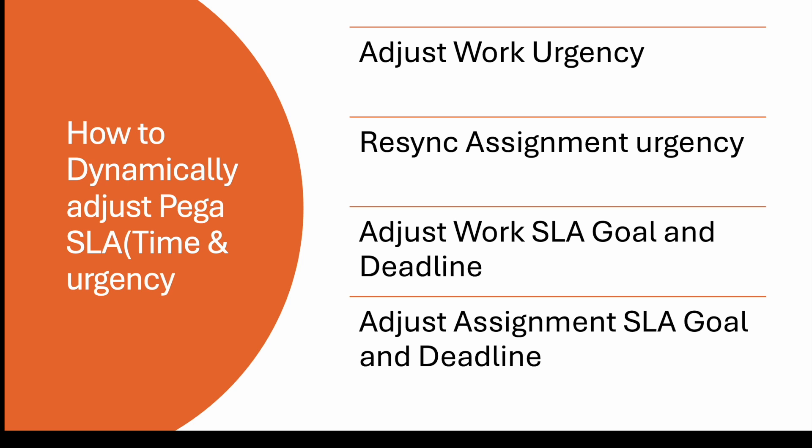We're going to discuss how to adjust case-level urgency, how assignment urgency gets calculated (assignment urgency plus work urgency equals total assignment urgency), how to resync assignment urgency when work urgency changes, how to adjust work-level SLA goal and deadline, and finally how to do the same for assignment-level SLA.